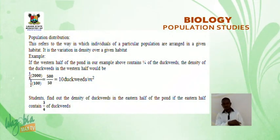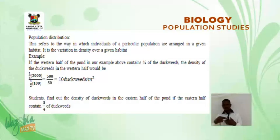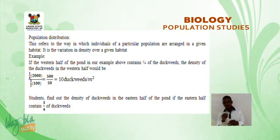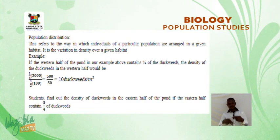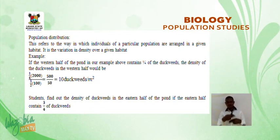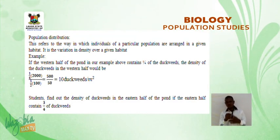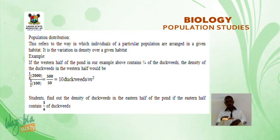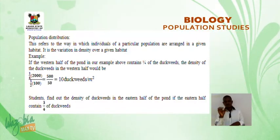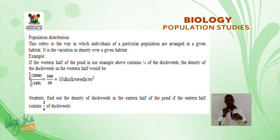Population Distribution refers to the way in which individuals of a particular population are arranged in a given habitat — it is the variation in density over a given habitat. For example, if the western half of the pond contains a quarter of the duckweeds, the density in the western half = (¼ × 2,000) ÷ (½ × 100) = 500 ÷ 50 = 10 duckweeds per m².